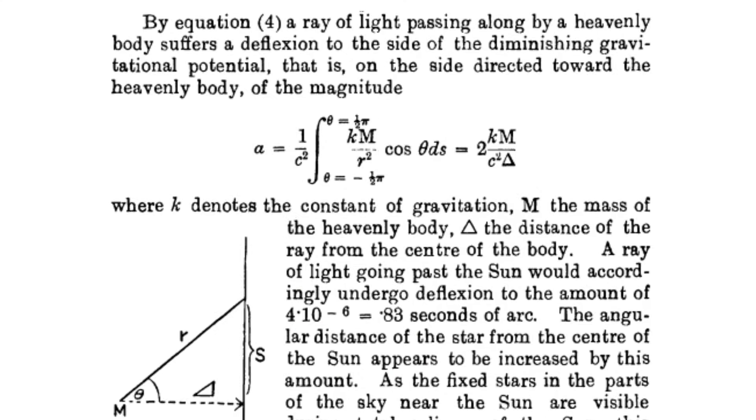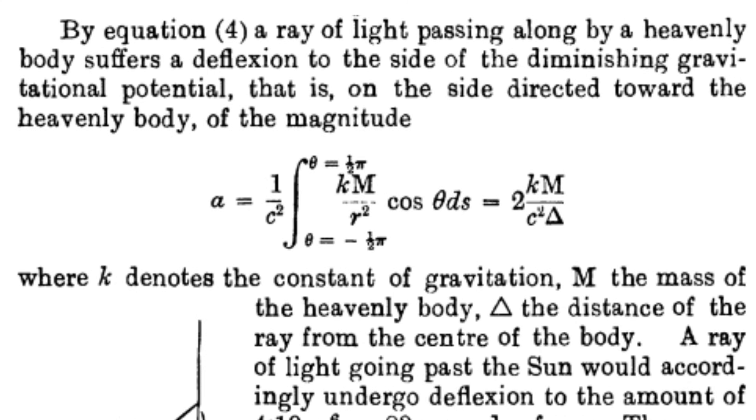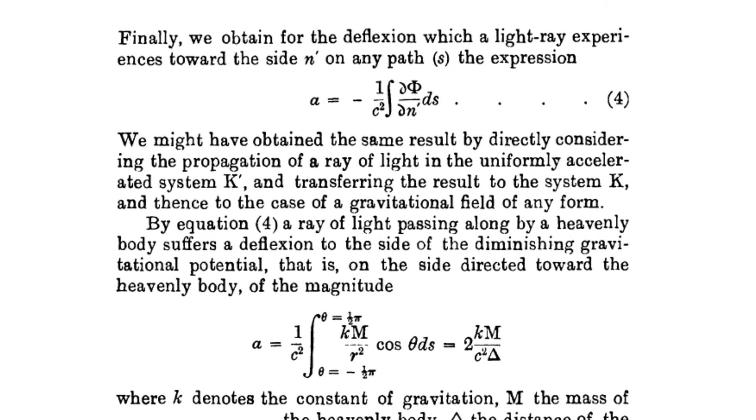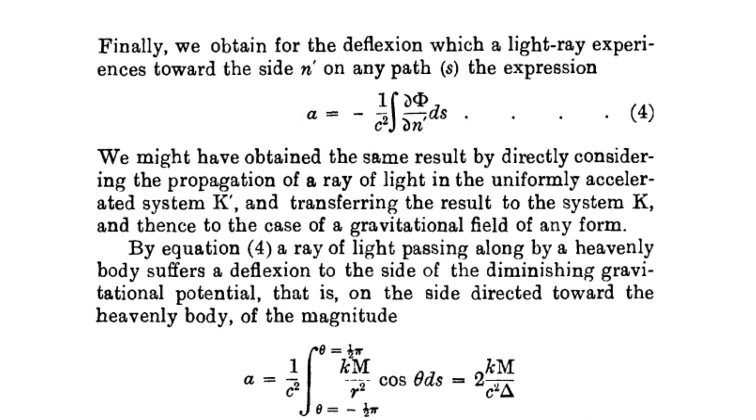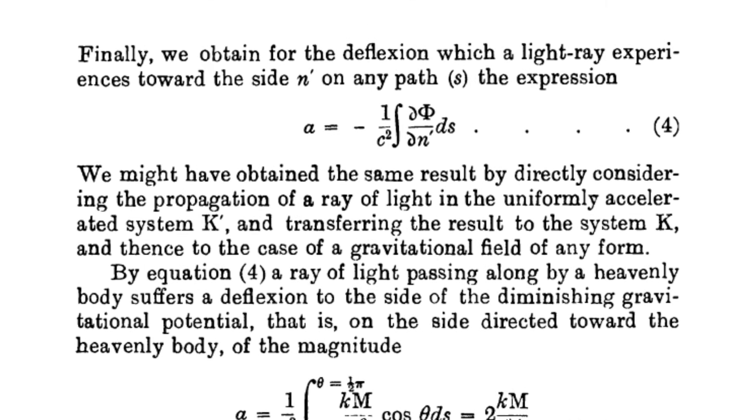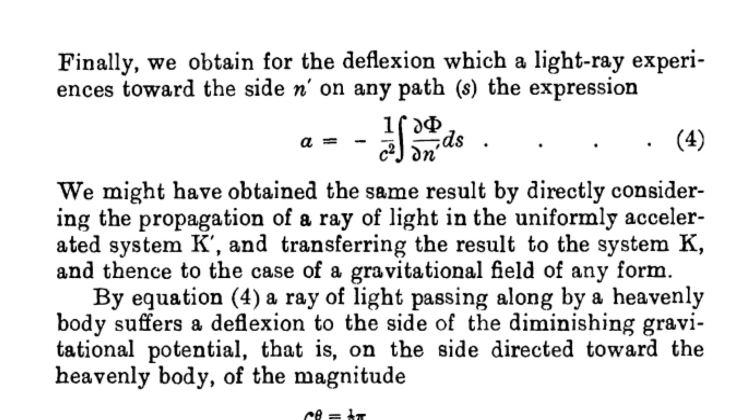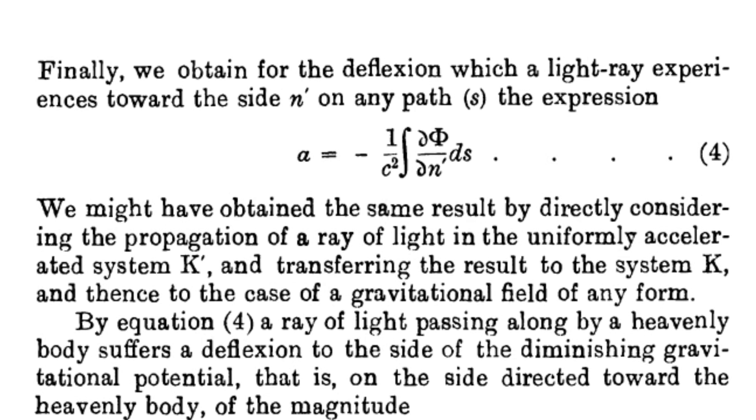But how did he get half the correct value in the first place? With Newtonian gravity and his equivalence principle, he treated light as a fast particle and being bent just because clocks tick lower, deeper in a gravitational potential, which is a linear effect.